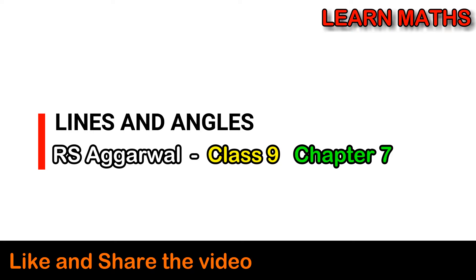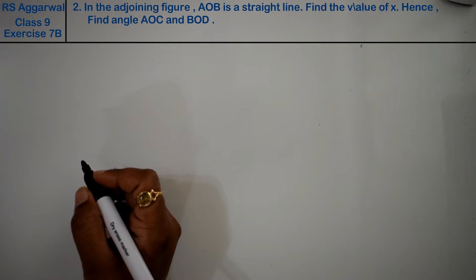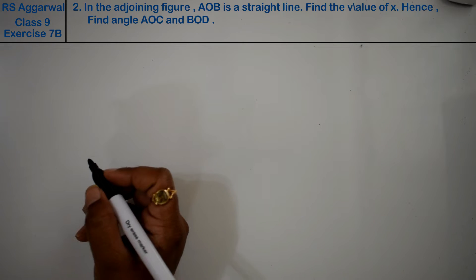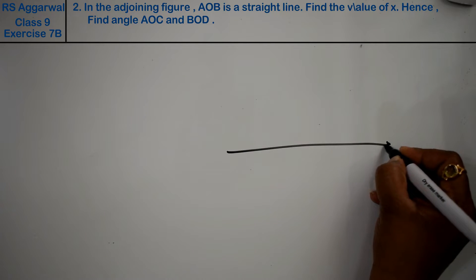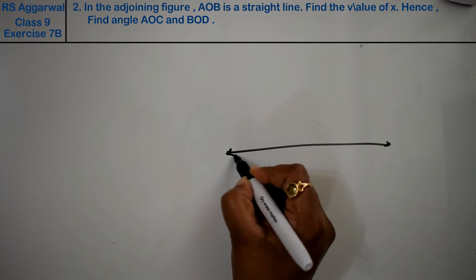Let's do question number 2 of exercise 7B, lines and angles. In the joining figure, I'm drawing the figure. This is a figure.